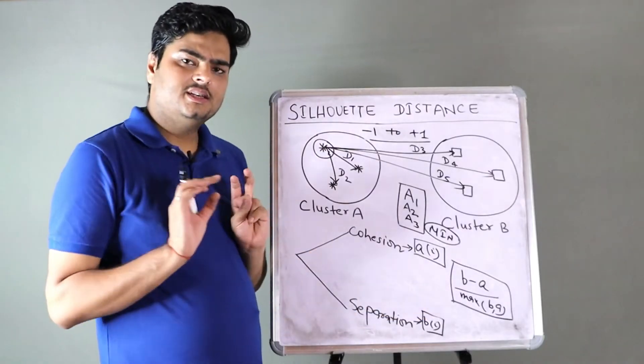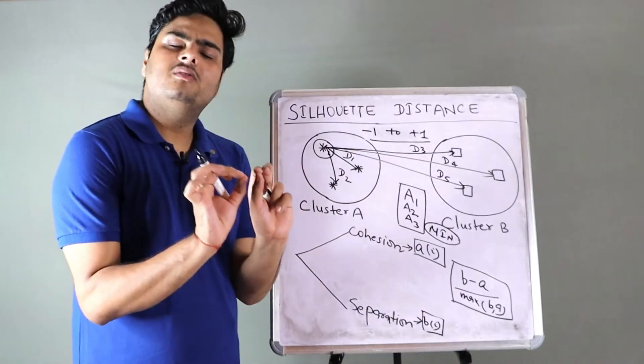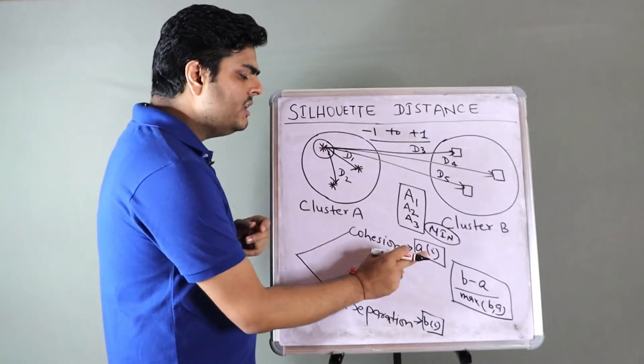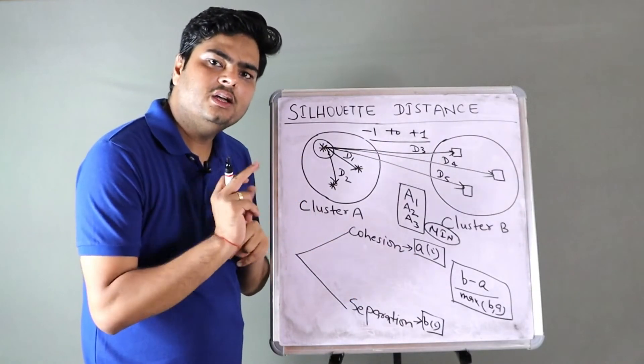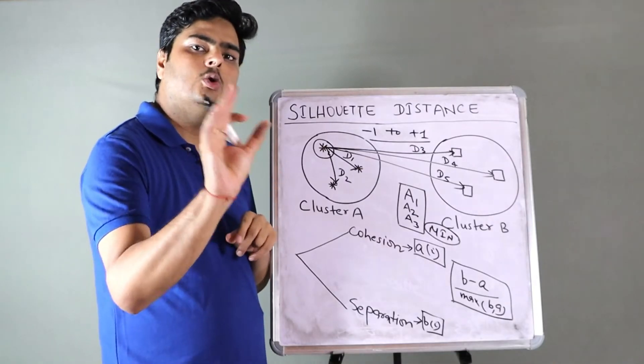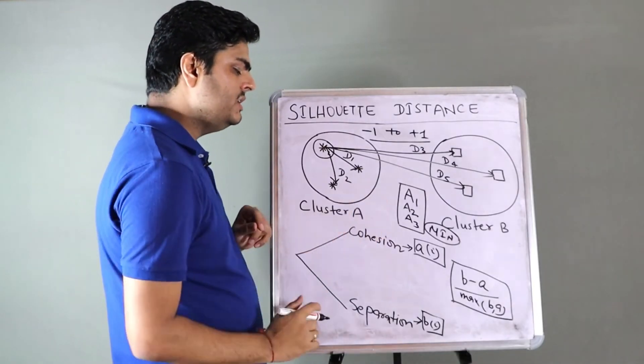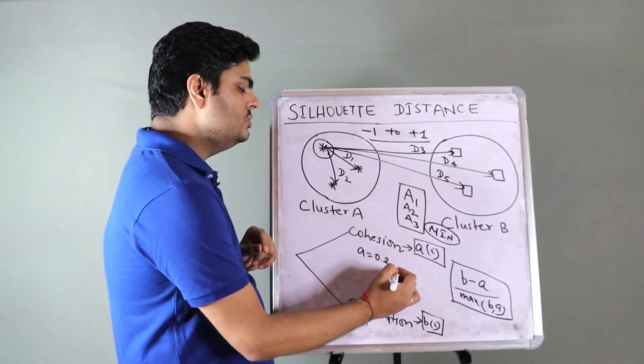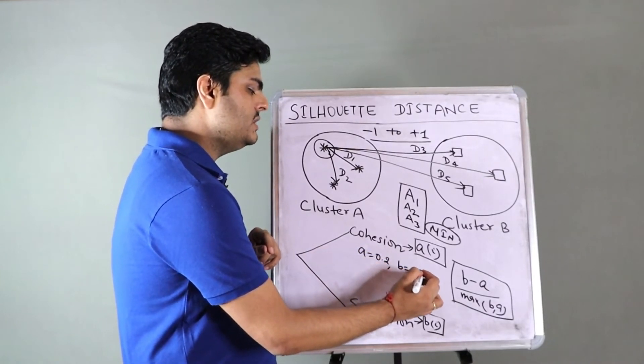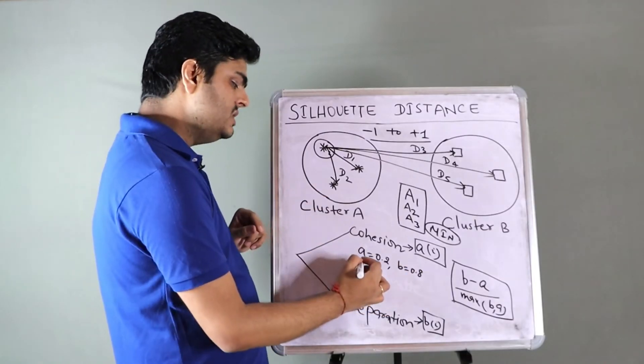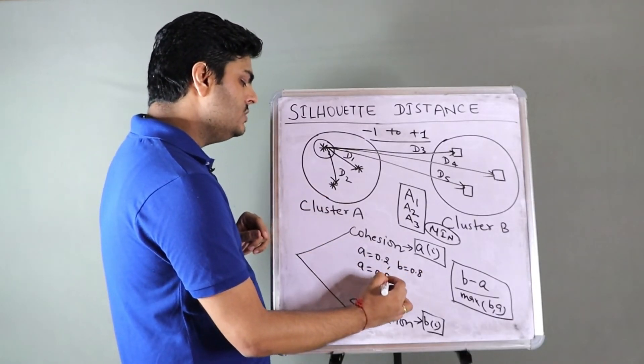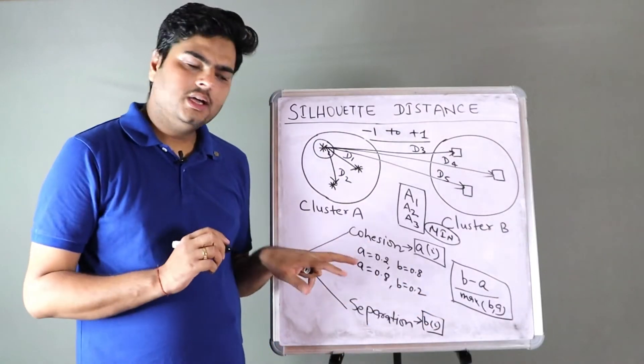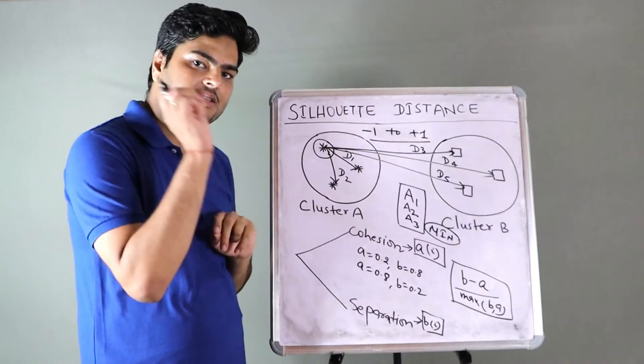Take the minimum mean. So what is the intuition behind this? The intuition is the nearest cluster. Whichever is the nearest cluster from this particular cluster, what is the average distance for this point? So what we are trying to see is few data points which are not part of this cluster, how close these data points are to this point. That becomes your B. So minimum of A1, A2, A3 becomes your B.